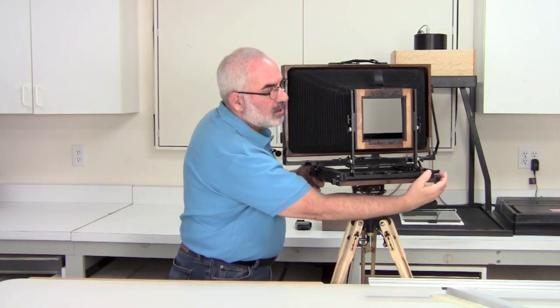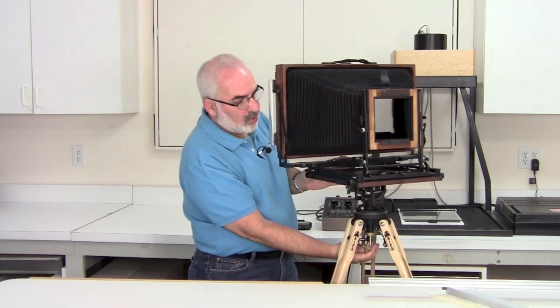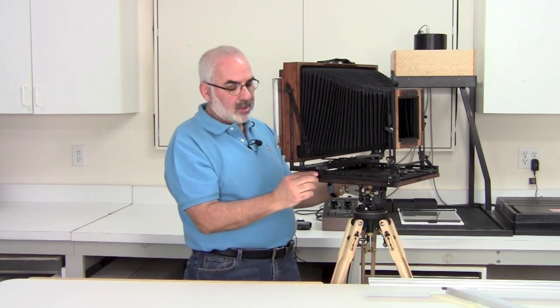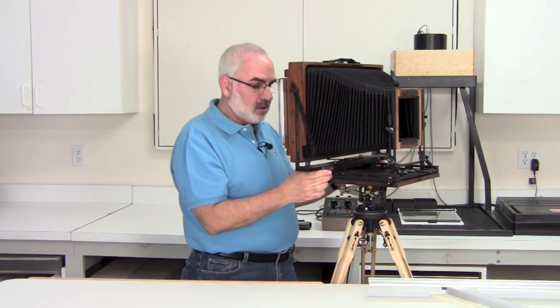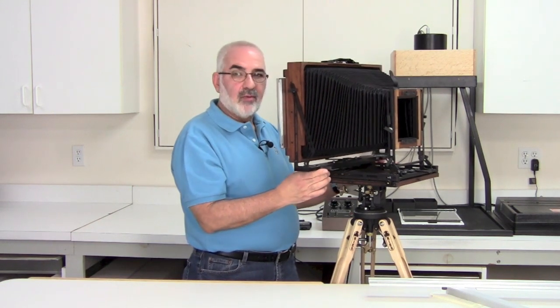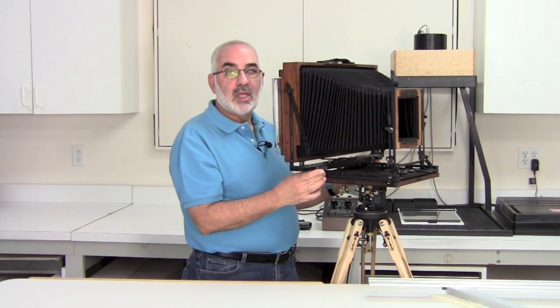And one of the other advantages of the Canem cameras are, let's just turn this sideways so you can see a little better. These two little bars here, one on each side, when you have a short lens, you could slide it forward. So if you have a shorter lens, let's say maybe a 210 super angular